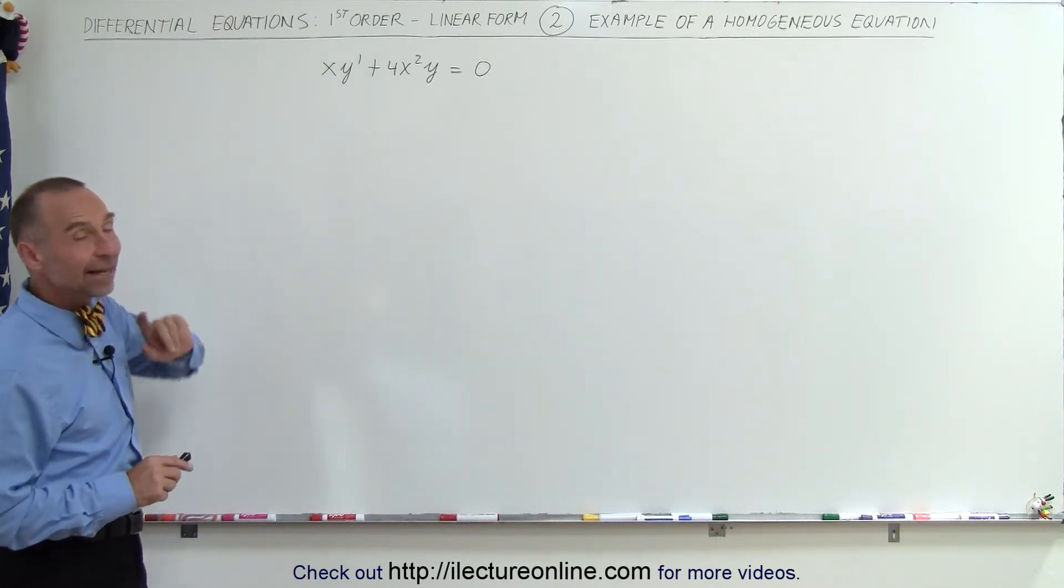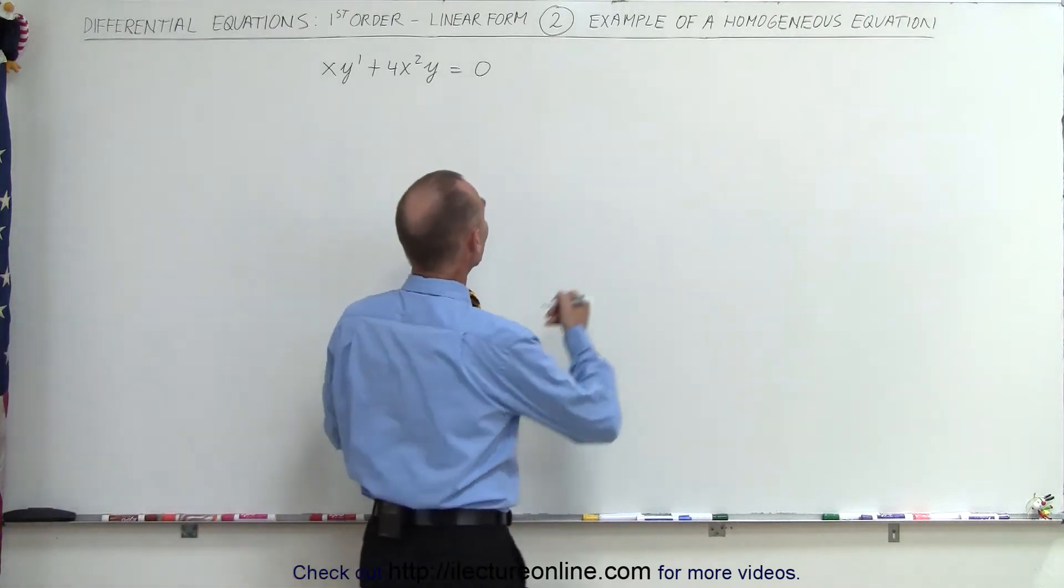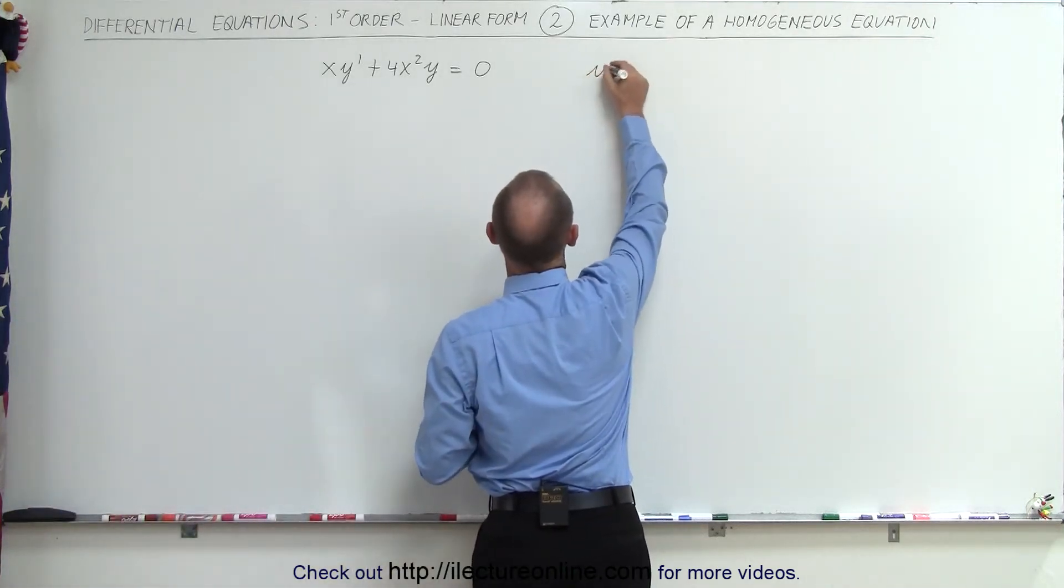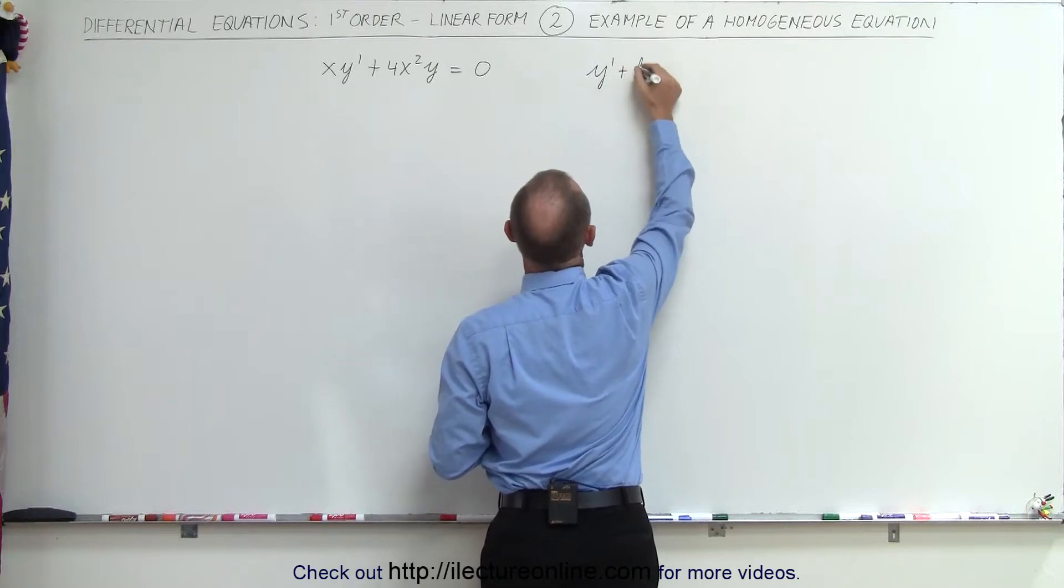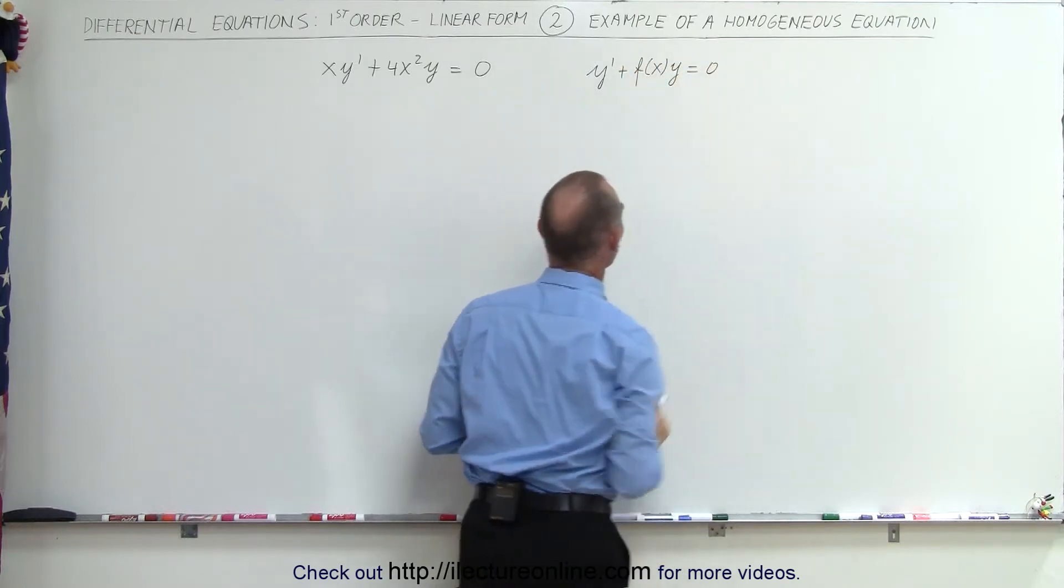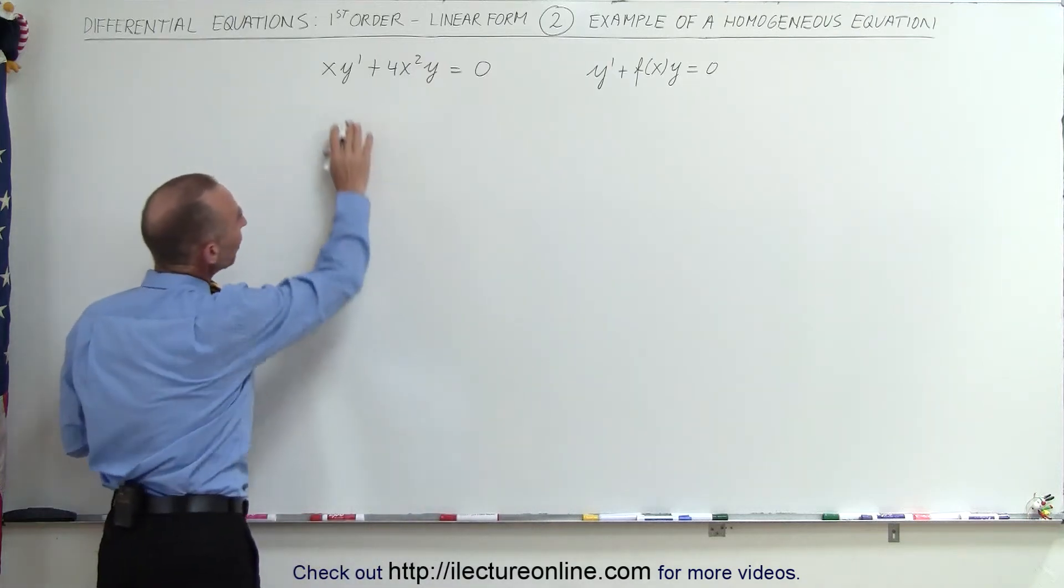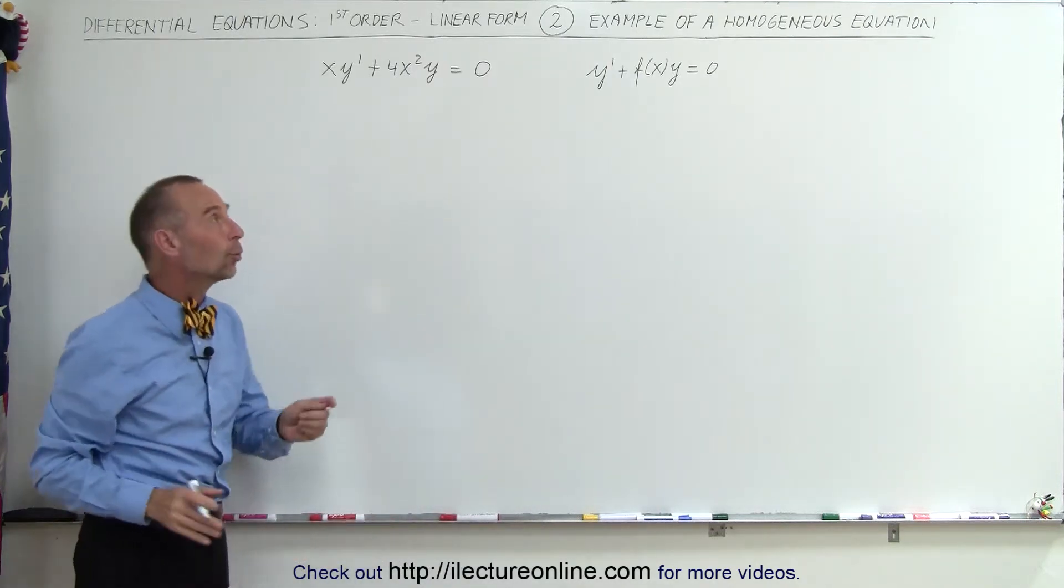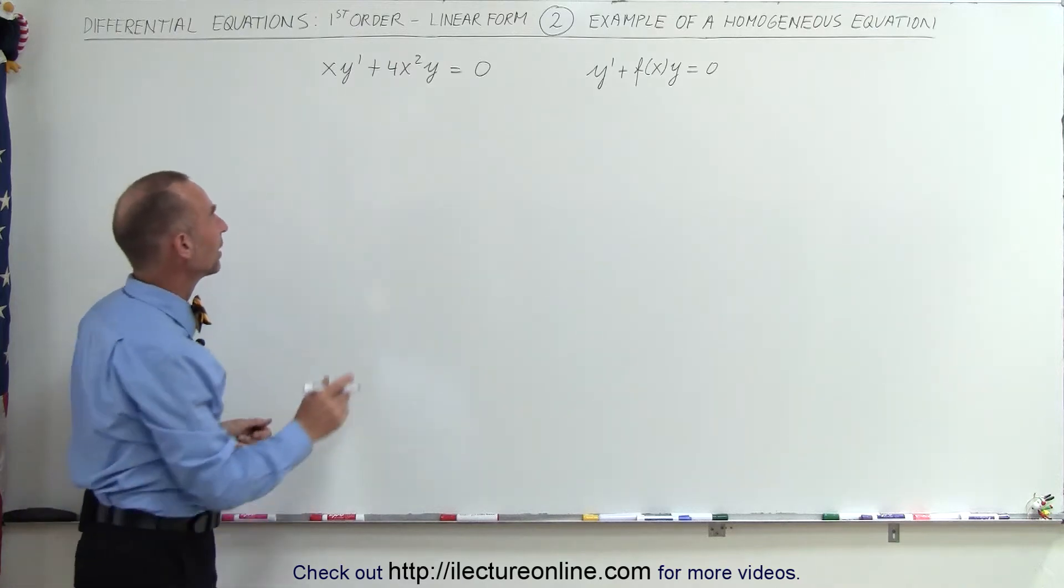Now you may not recognize it immediately as such because the general form of that equation is y' plus some function of x times y equals zero. So that's the homogeneous form, and you realize here that if you divide both sides of the equation by x, you will get it into that form.